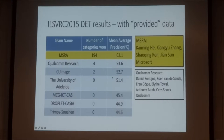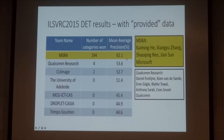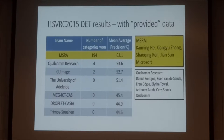The winner of the track with provided data is the MSRA team. The team members are Kaiming He, Xiangyu Zhang, Shaoqing Ren, and Jian Sun from Microsoft. The runner-up is CUImage Research: Daniel Funtich, Coin Medicine, Eran Shorgo, Blast Torval, Antonia Serra, and Kai Snoop. Congratulations to both teams.